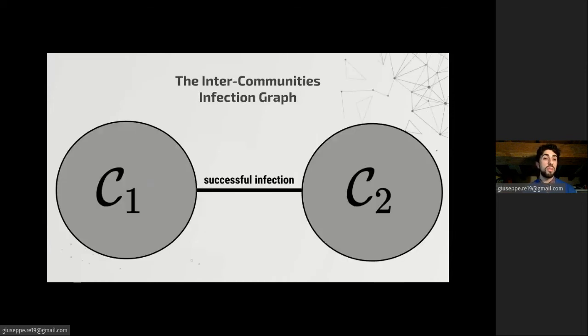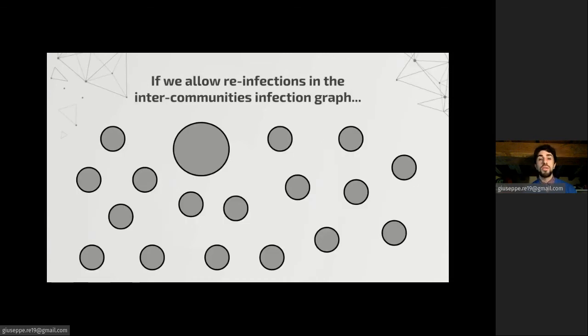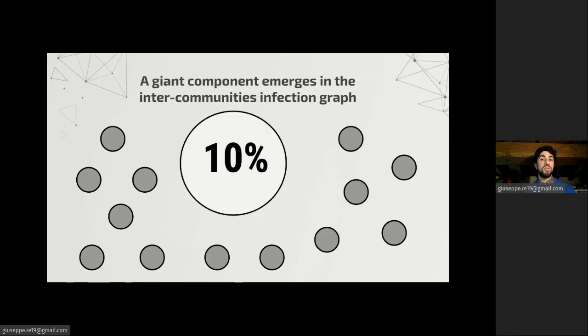More precisely, we define the inter-community infection graph, in which communities are nodes and two communities are linked by an edge if and only if there is a successful infection between them. So if we don't allow reinfection, this graph has a small connected component. But if we allow reinfection with a certain rate, then a large giant component emerges containing a constant fraction of the nodes. And so if this is the actual outcome of the dynamic process, we can study it as if it is a static random graph.